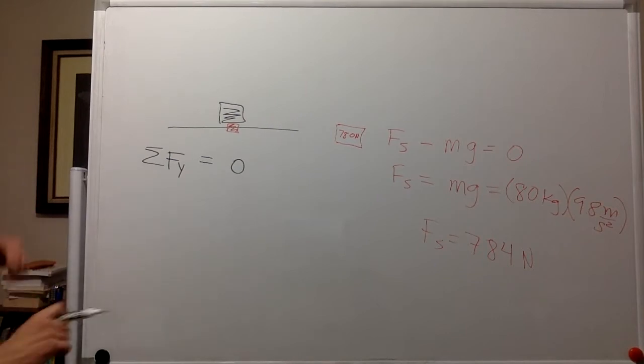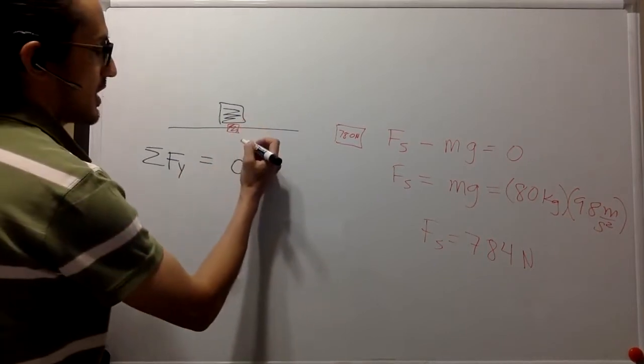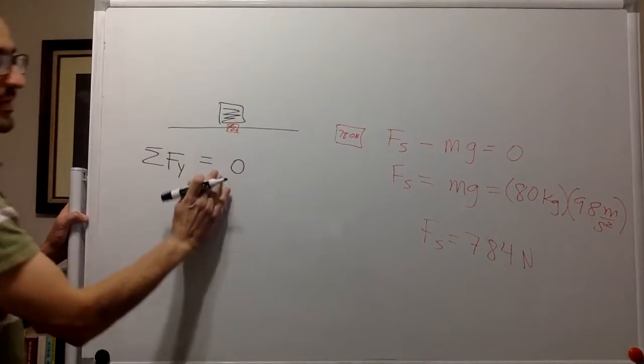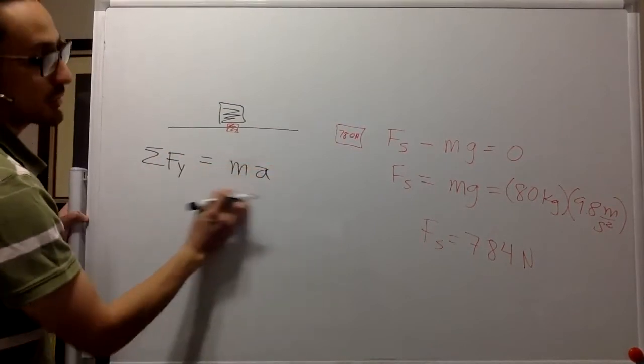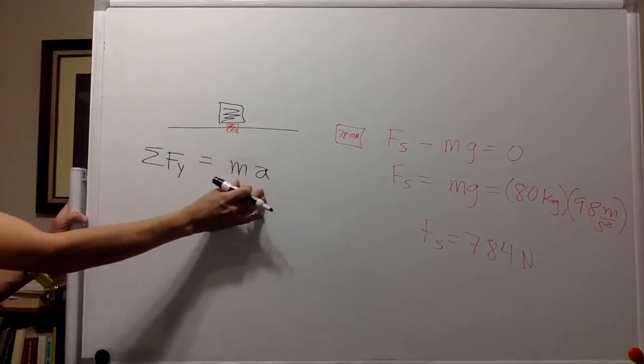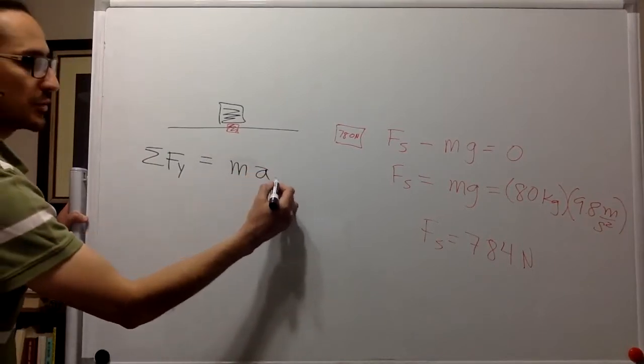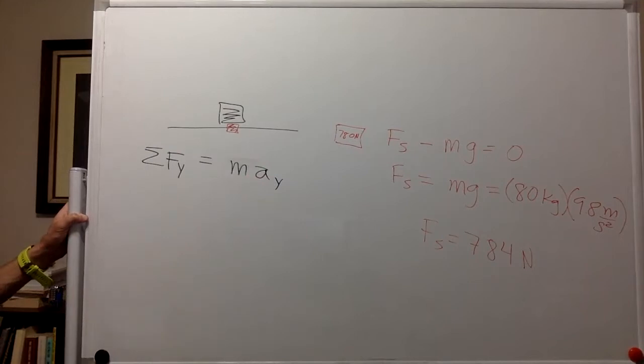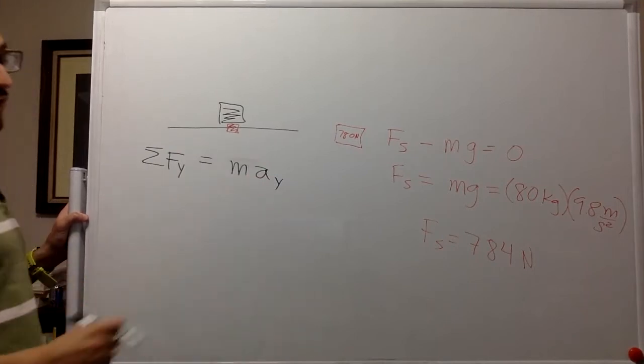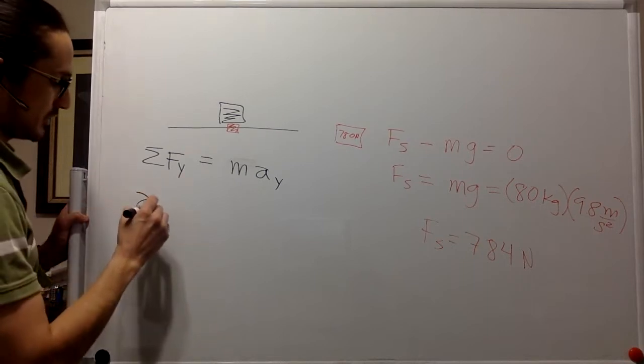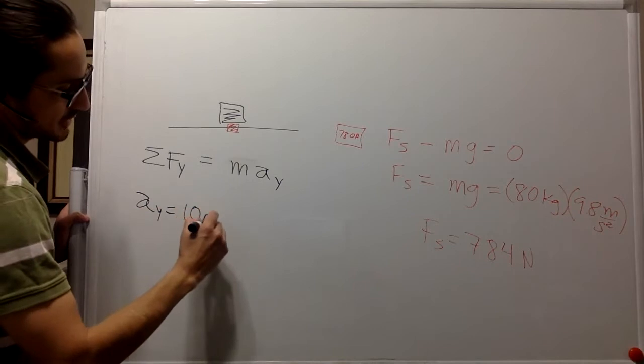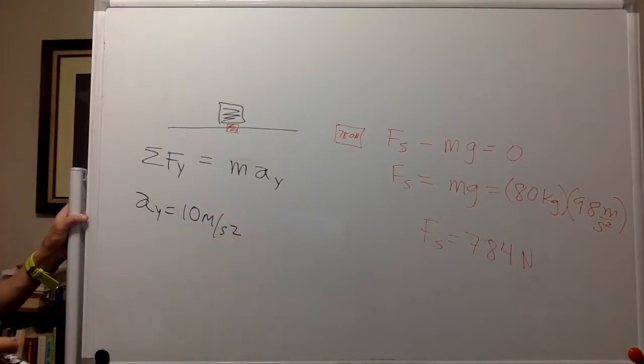On the other hand, if there is an acceleration, then this is not equal to zero anymore. This is equal to, well, it was always equal to mass times acceleration in y, but the acceleration was zero. Now it is not. They are telling us that the acceleration is 10 meters per second squared.